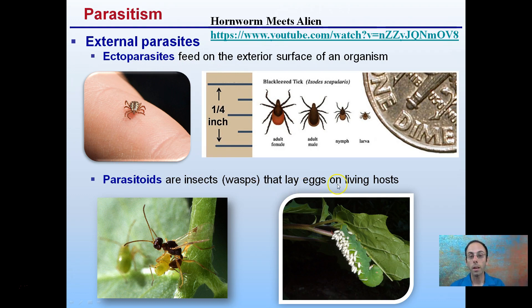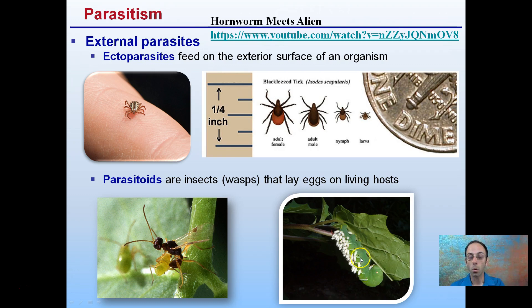Parasitoids are insects or wasps that lay eggs on a living host. A parasitic wasp will lay eggs inside of an insect, and they'll grow, multiply, and divide within that insect. Hornworms that feed on tomato plants can be infected with a parasitic wasp — the offspring are essentially eating the hornworm from the inside out. This not only saves the tomato plant but also causes more parasitic wasps to populate the local area.